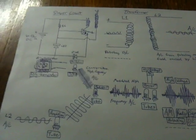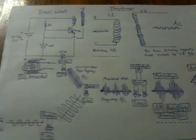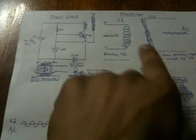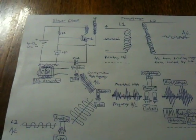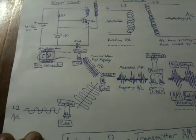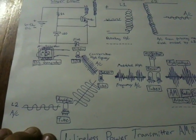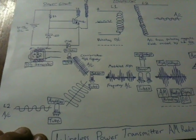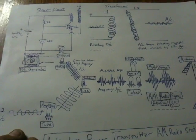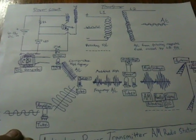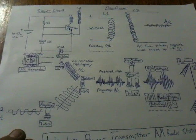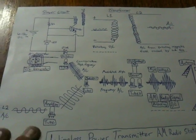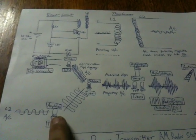After it becomes an alternating current from the pulsating DC, we then increase the amplitude of the signal, the frequency, the voltage, and the power of the signal. And the way that's done is with vacuum tubes.